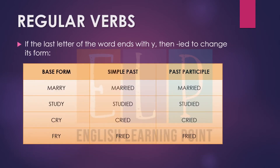In the same way, if the last letter of the word ends with Y, then IED is added to change its form. For example, when a verb ends with Y, we omit Y and put IED. Like: marry → married, married; study → studied, studied; cry → cried, cried; fry → fried, fried. We omit Y and use IED for making the past form as well as the past participle form.